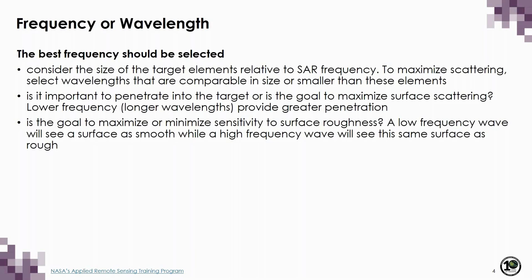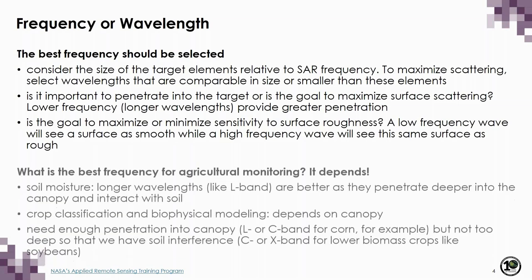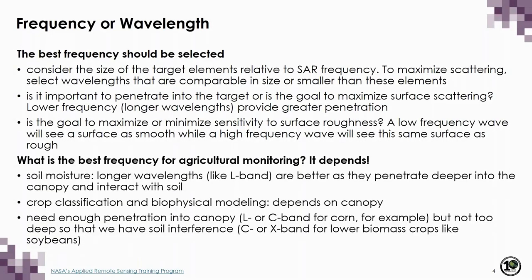Another consideration is whether to maximize or minimize sensitivity to surface roughness. If monitoring tillage, we want to maximize sensitivity to roughness; if estimating soil moisture, we want wavelengths that minimize roughness sensitivity. A lower frequency wave will see a surface as smooth, while a high frequency wave will see the same surface as rough. There is no simple best frequency for agricultural monitoring — it depends on the application. For soil moisture retrieval, we tend to favor longer wavelengths like L-band, which can penetrate smaller canopies and interact with the underlying soil.